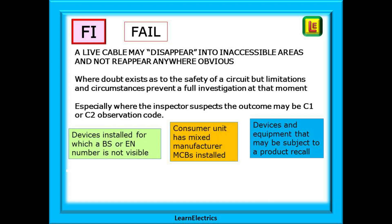A live cable may disappear into inaccessible areas and not reappear anywhere obvious. You may suspect that mixed devices in a consumer unit may not be compatible and want to check further. Use FI where doubt exists as to the safety of a circuit but limitations and circumstances prevent a full investigation at that moment, especially where the inspector suspects the outcome may be a C1 or C2 observation code.